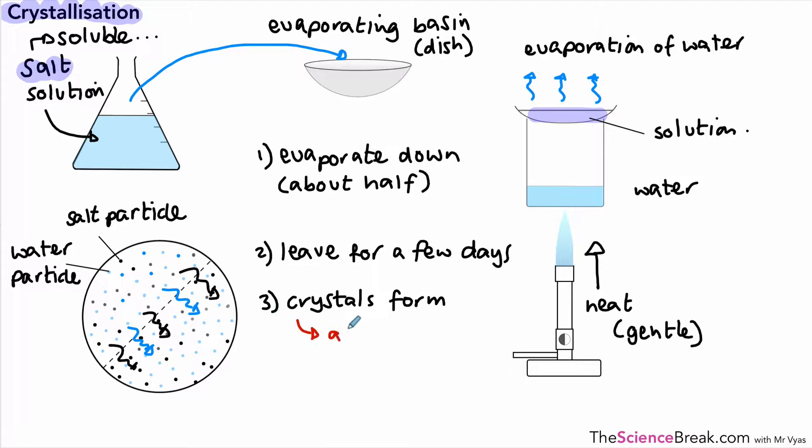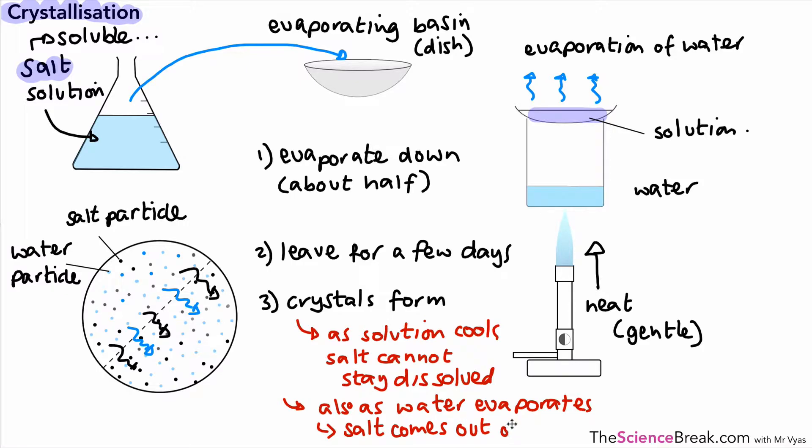Why do we get those crystals? As the solution cools down, less salt is able to stay in the solution. So it comes out as crystals. It actually comes out of solution. Also, as the solution evaporates over time, there's less water, so obviously less salt can stay in the solution. So it then comes out as crystals. That's explaining why we get the crystals coming out of the solution. And this is the method and how crystallization is used.